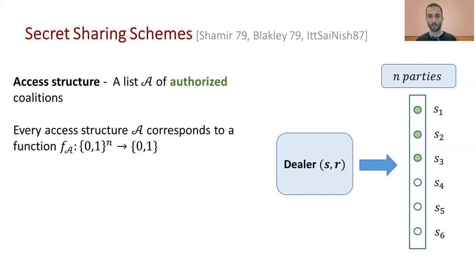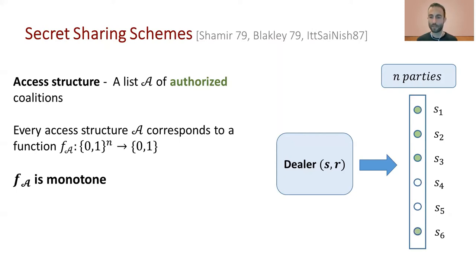We say we want to share the secret according to some boolean function, and the function will be monotone. Why? If a subset — say parties one, two, and three — can recover the secret, then adding another party (party six) means all four together can also recover it: they run the reconstruction algorithm with the shares of parties one, two, and three and simply ignore party six's share. That is what we mean by monotone.